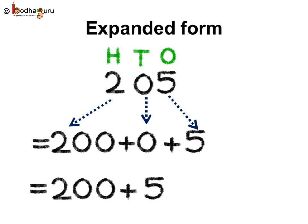Thus, 205 has 2 hundreds, 0 tens, look carefully again, it has 0 tens and 5 ones. So, 205 is equal to 200 plus 0 plus 5, or 205 is equal to 200 plus 5 as tens place is 0 here.